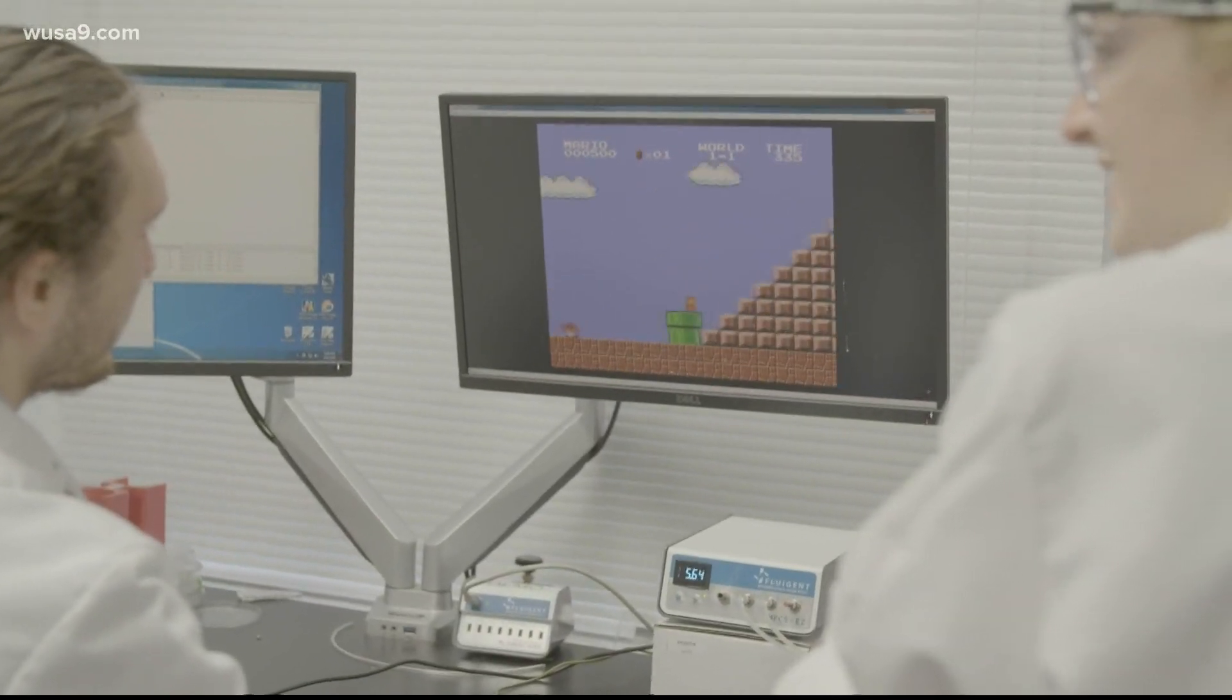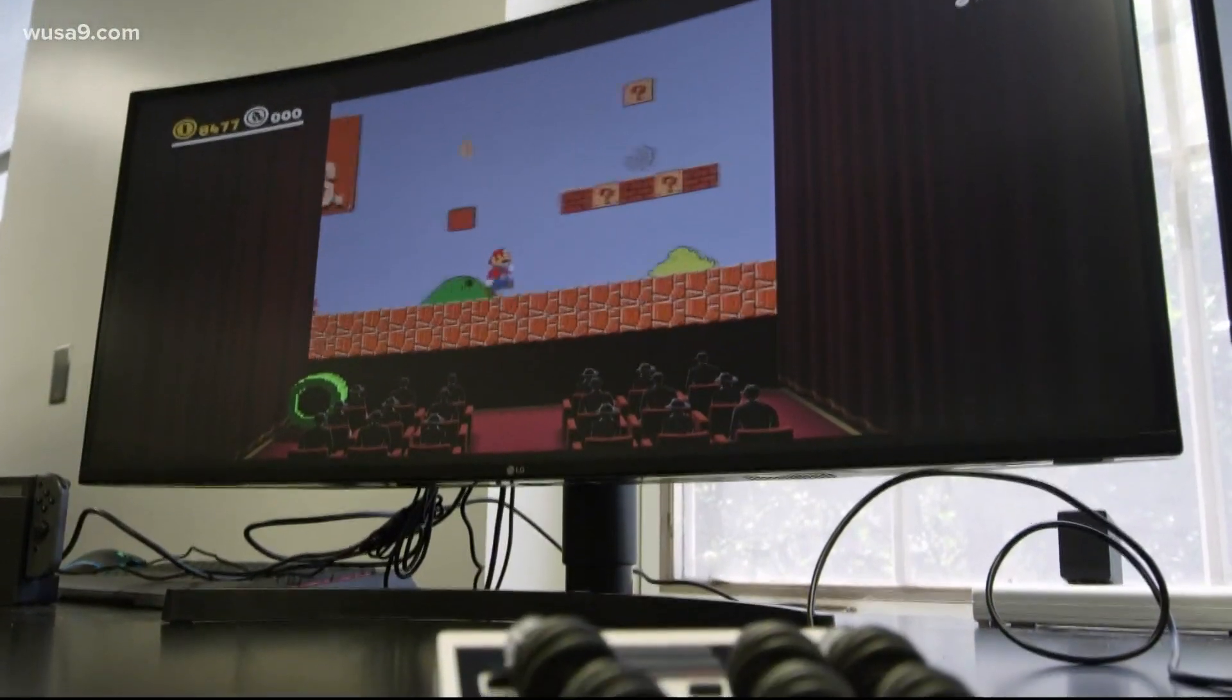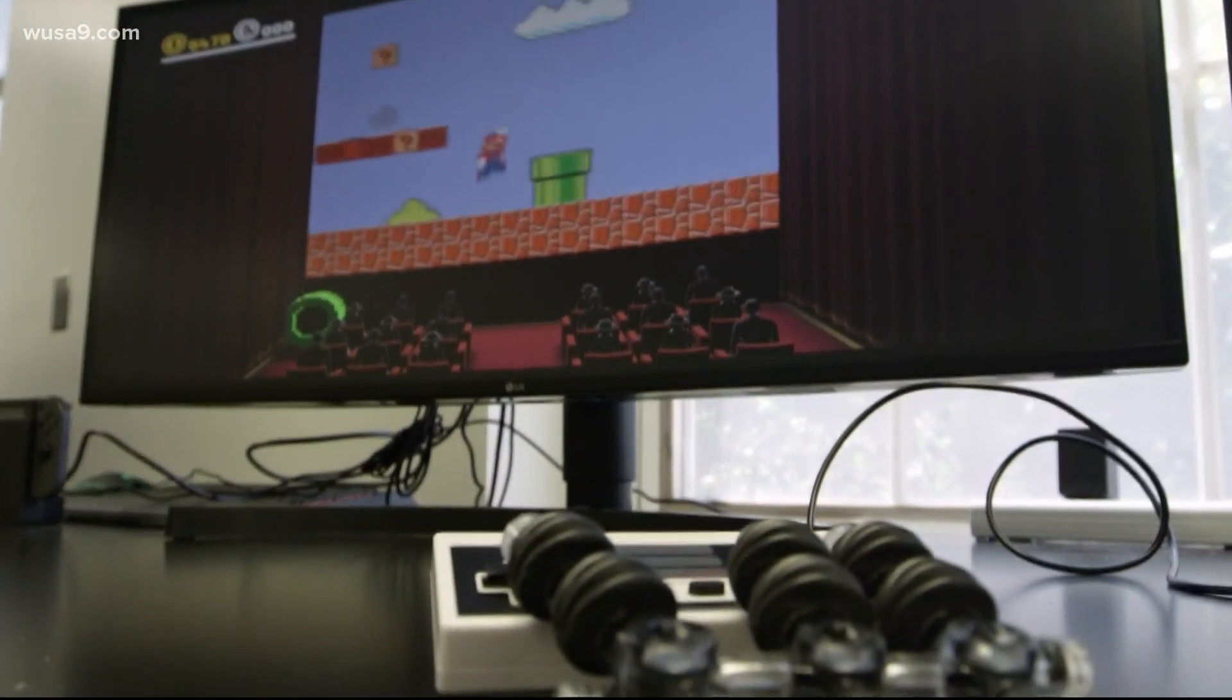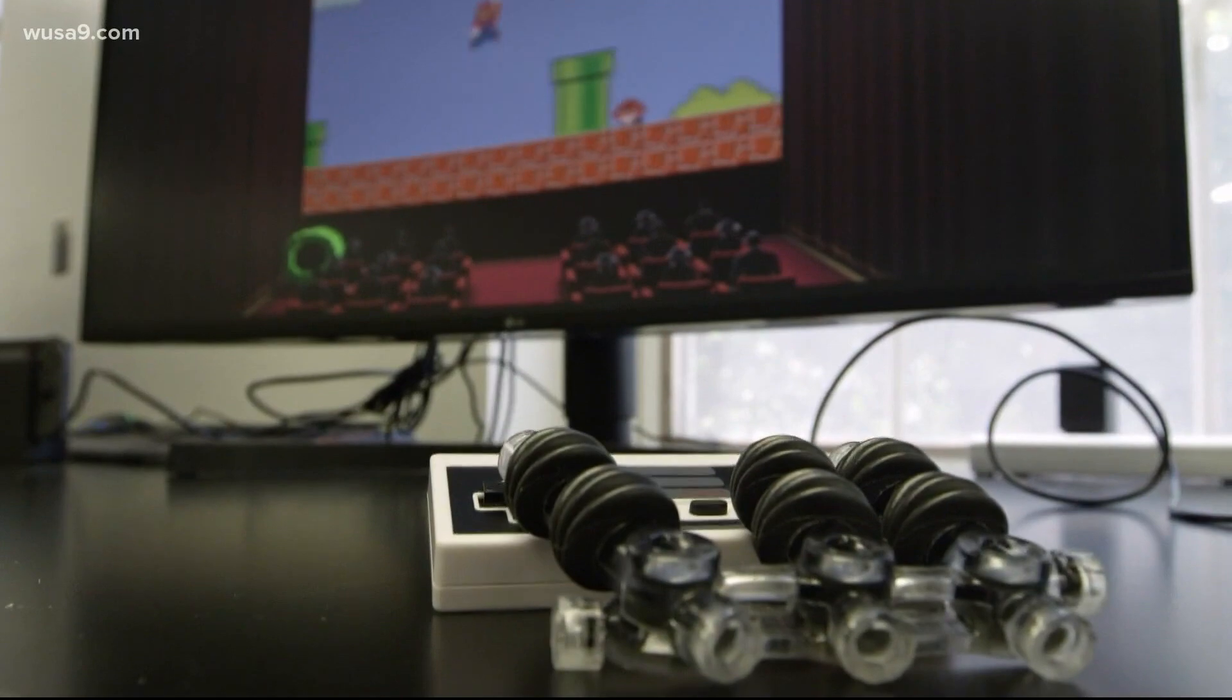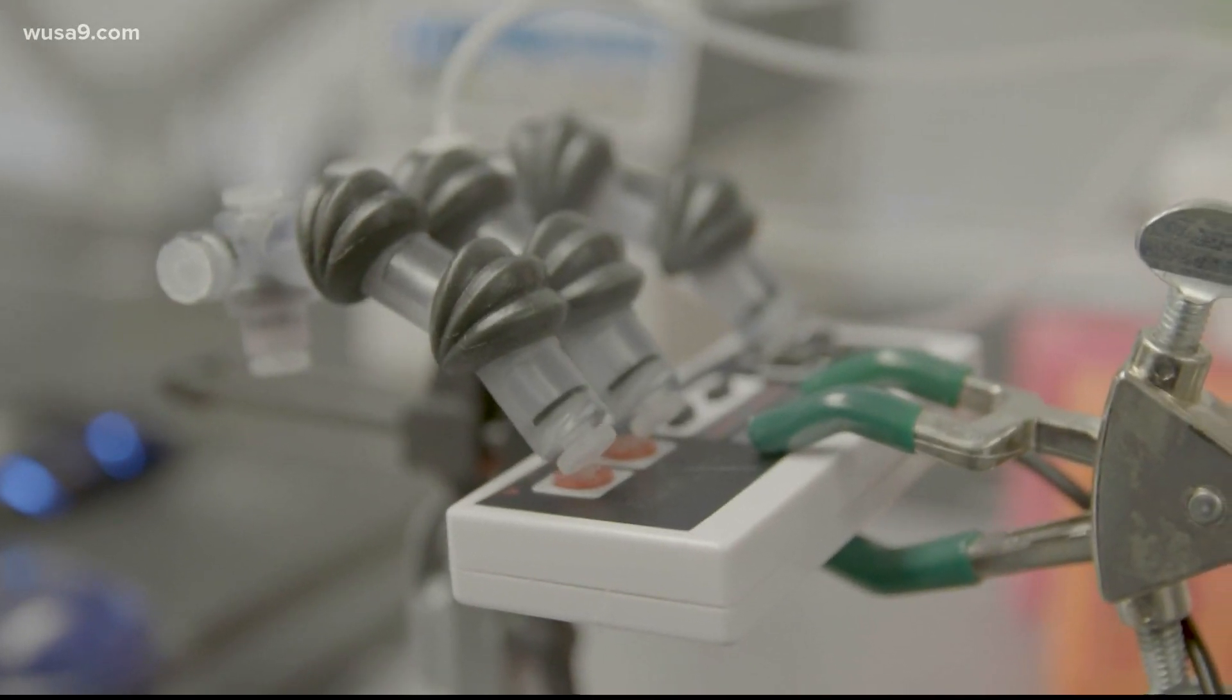That pressure determines whether Mario walks, runs or jumps. Instead of a young Ryan Sokol beating the first level of Mario, this time it was his robot hand, finishing in 90 seconds. The soft robotic hand is slower than I was as a kid, but it certainly doesn't die as much.